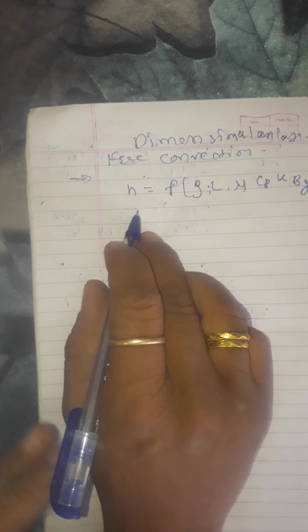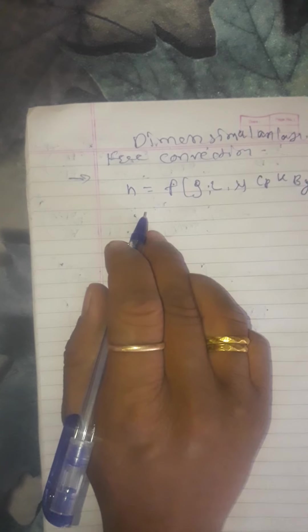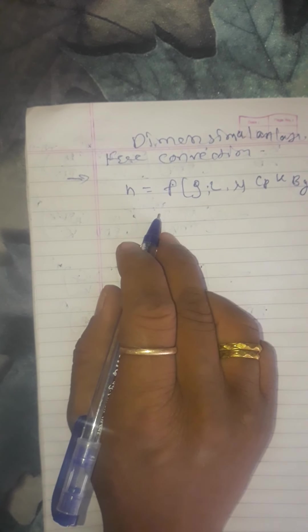Therefore, velocity V is no longer an independent variable and depends upon the following factors: delta T difference in temperature, beta that is coefficient of volume expansion of the fluid, and G acceleration due to gravity. These parameters affect the free convection.